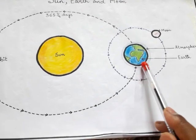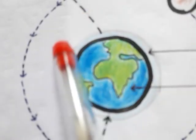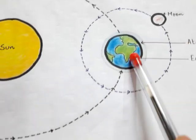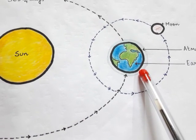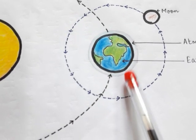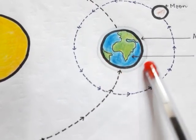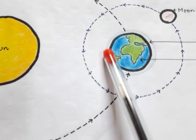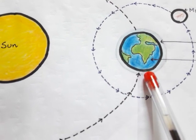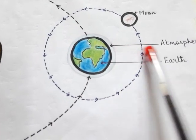You can see the thin layer I have drawn around the Earth — this is called the atmosphere. The atmosphere, or blanket of air, contains gases that support life, such as oxygen, nitrogen, and carbon dioxide. This thin layer covering the Earth is what we call the atmosphere.